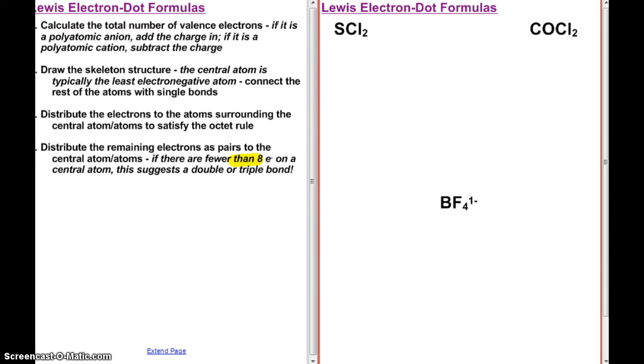So the first thing I want to do is calculate the total number of valence electrons. So SCL2, I'm going to get 6 from sulfur, and I'm going to get 7 from each chlorine, so that's 14. So that's a total of 20 valence electrons for that one.